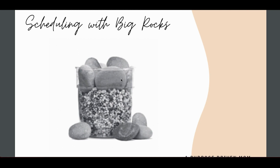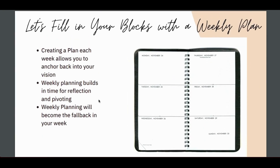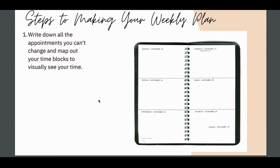Use your time blocks to schedule big rocks first — let your goals and priorities go first, then fill in the rest. I know it feels like you won't have enough time, but you will if you do it strategically. Make a plan for the week. It lets you anchor into your vision, have time to pivot, and fit in time for you. The first step is to go into the time blocks you've made and write down all the things you can't change — appointments, commitments — kids' soccer practice, doctor appointments, work. Put those in first because you cannot change them.